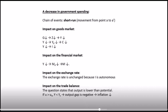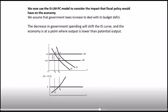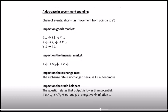The short run is a movement from point A to A-bar along the LM curve. In the goods market: the decrease in government spending causes a decrease in demand for goods and services, output decreases, disposable income decreases, consumption decreases. If Y decreases, investment decreases. Remember, the multiplier process is always in operation.